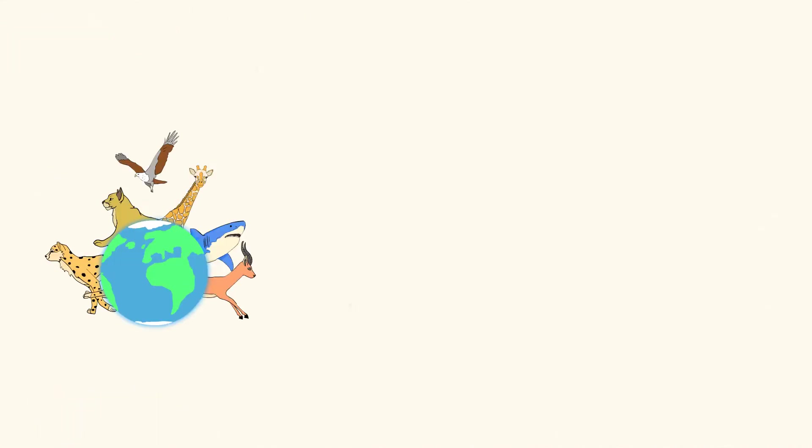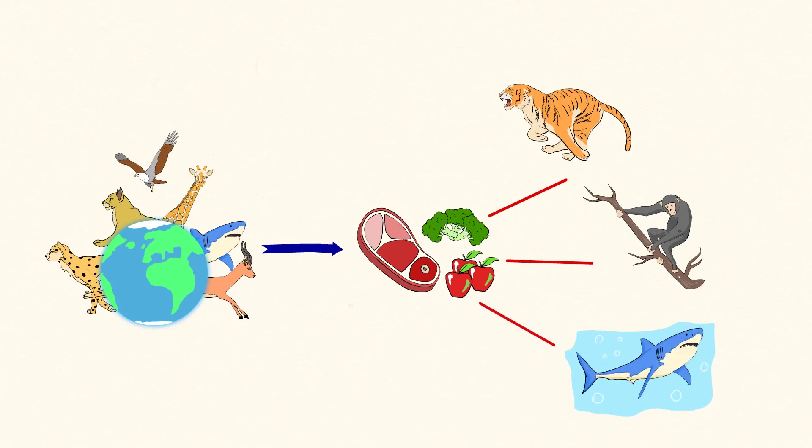Our planet is full of so many different kinds of creatures. All of them need food for energy in order to run, climb, and swim.